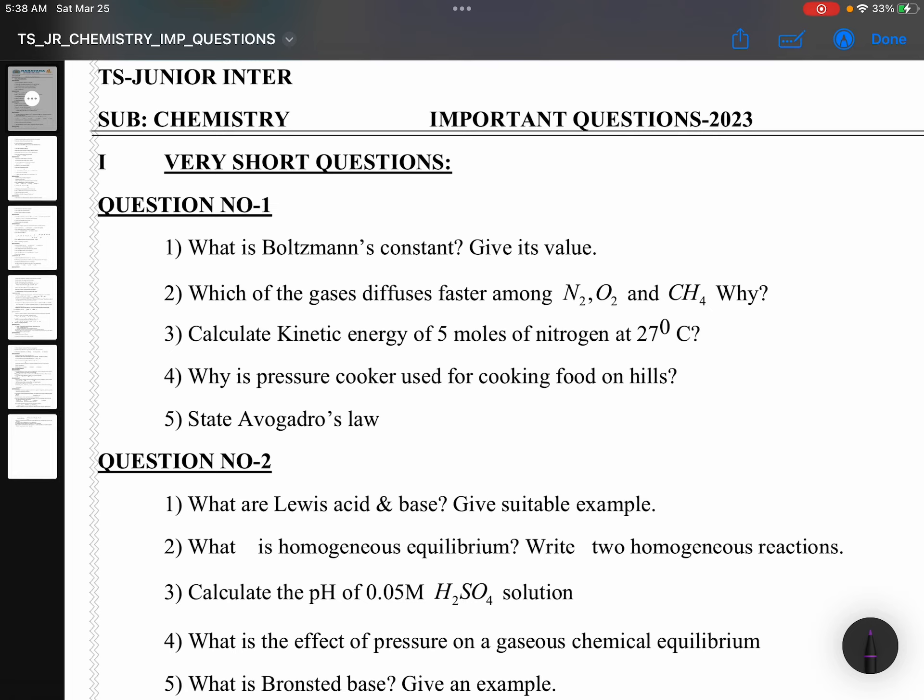Generally in Question 1: What is Boltzmann constant? Give its value. Which of the gases diffuse faster among N2, O2, and CH4 and why? Calculate kinetic energy of 5 moles of nitrogen at 27 degrees Celsius. Why is pressure cooker used for cooking food on hills? State Avogadro's law, means it is from states of matter.